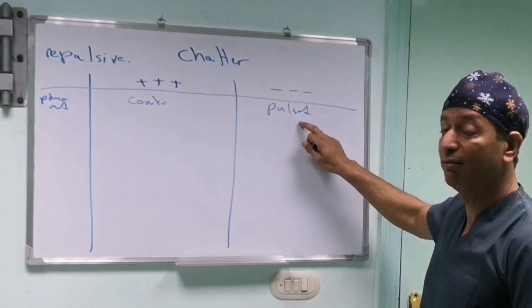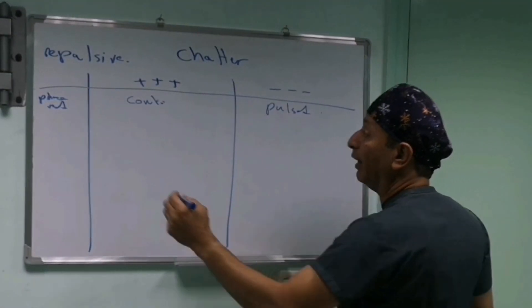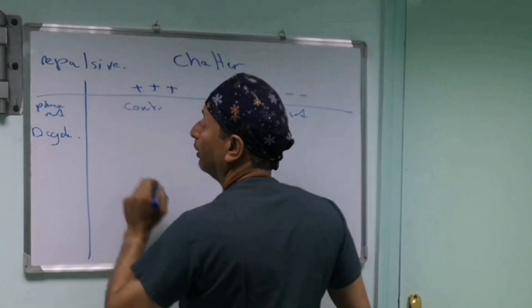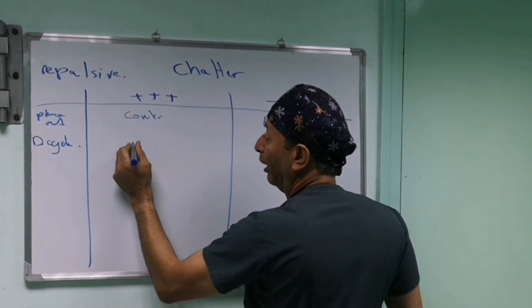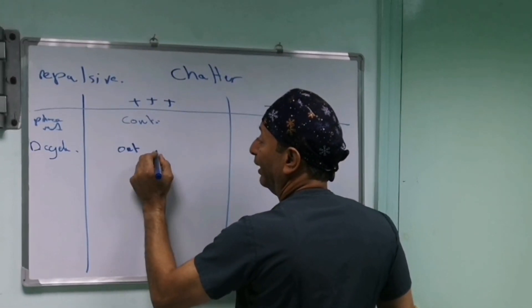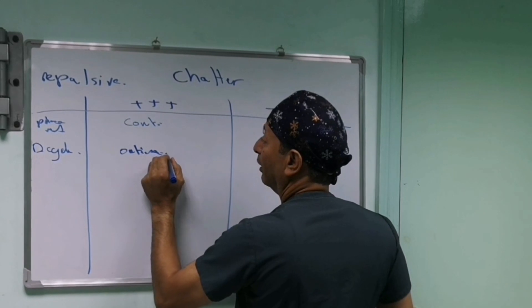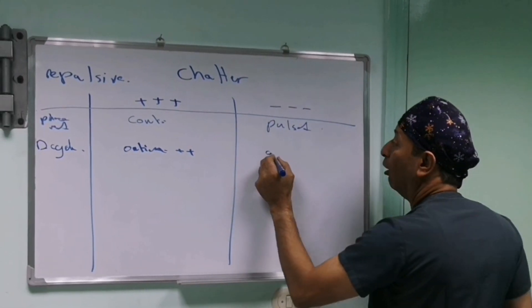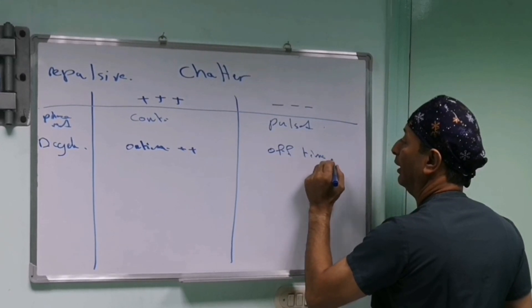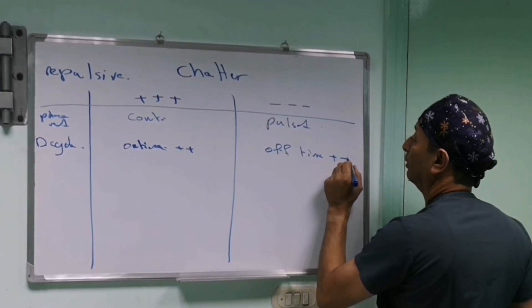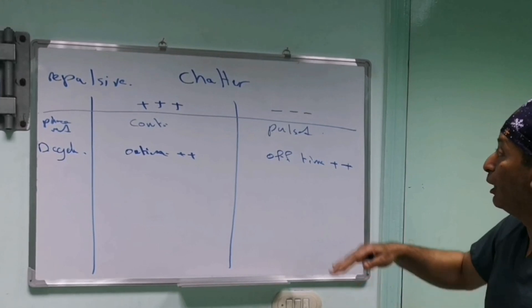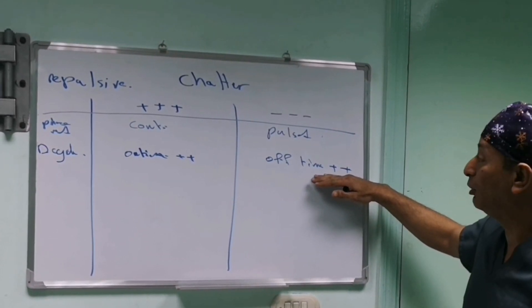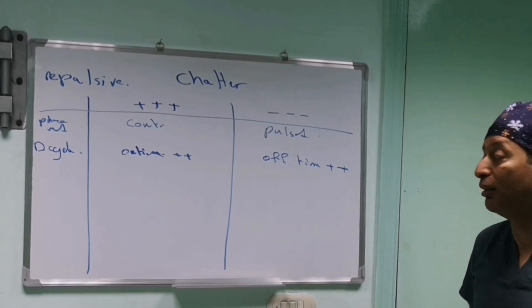If you use pulse phaco, you look at the duty cycle. If the on-time is increased, that will increase your shutter. If the off-time is increased, that will decrease your shutter. So if you turn to pulse and decrease your on-time and increase your off-time, this should decrease your shutter.